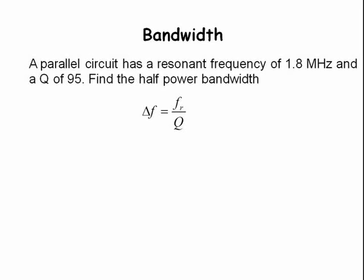The formula we're going to use is Δf equals f sub r divided by Q. Substituting the values, we have Δf equals 1.8 times 10 to the 6th divided by 95.